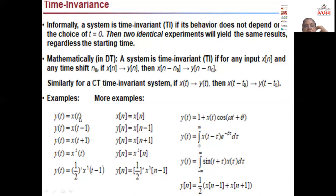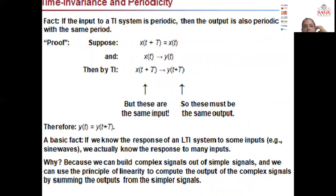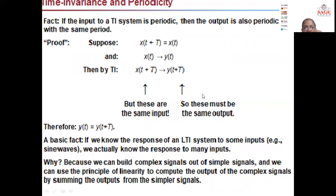These are a few examples showing the time invariance property of the system. When we talk about time invariance, a related property is periodicity. A signal is periodic if it repeats after a regular interval of time T. For a continuous time signal x(t), if x(t) equals x(t + T), then it is a periodic signal. A basic fact is that if we know the response of an LTI system to some input such as sine waves, we actually know the response to many inputs.